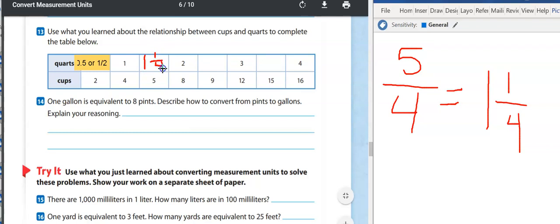Now on your own, you're gonna press pause and you're gonna work out the next two blank spaces in the table on your own. So for your answers, you should have had two and one fourth is equivalent to nine cups. And three and three fourths quarts is equivalent to 15 cups. Let's move on to question 14.